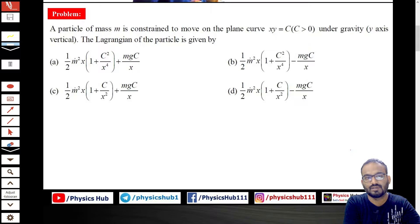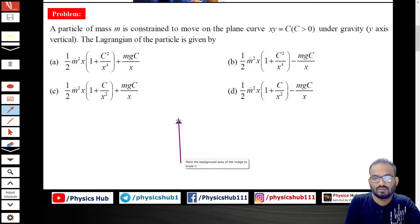Under gravity, y-axis vertical. The Lagrangian of the particle is given. First of all, let us start to understand how does this xy = c curve look like.